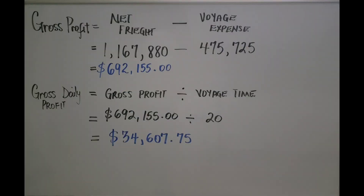We have now calculated the net freight and need to find the gross profit, which is net freight minus voyage expense. So $1,167,880 − $475,725 = $692,155 gross profit.